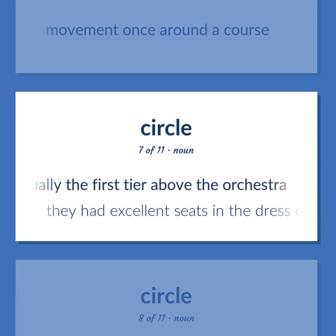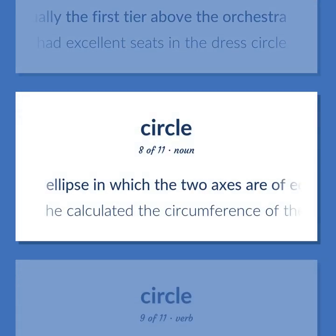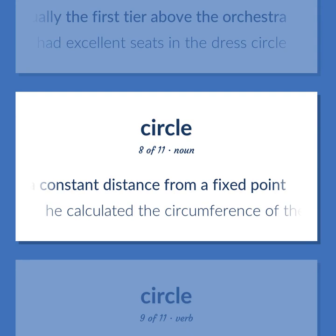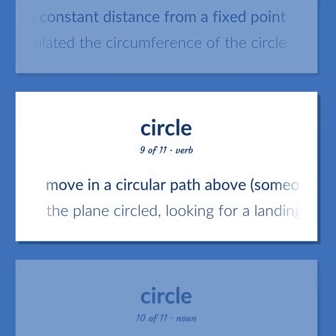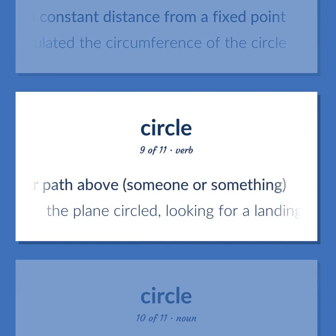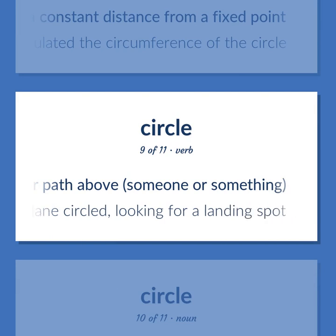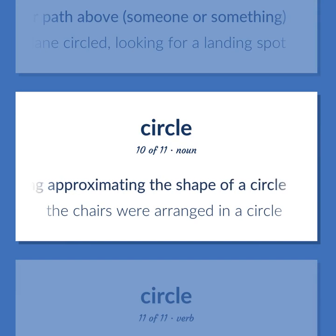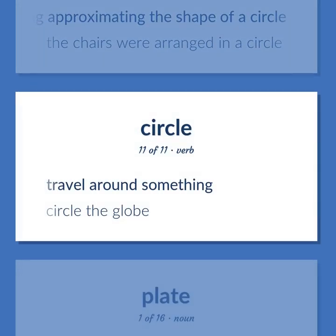They had excellent seats in the dress circle. An ellipse in which the two axes are of equal length; a plane curve generated by one point moving at a constant distance from a fixed point. He calculated the circumference of the circle. Move in a circular path above someone or something. The plane circled looking for a landing spot. Something approximating the shape of a circle. The chairs were arranged in a circle. Travel around something. Circle the globe.